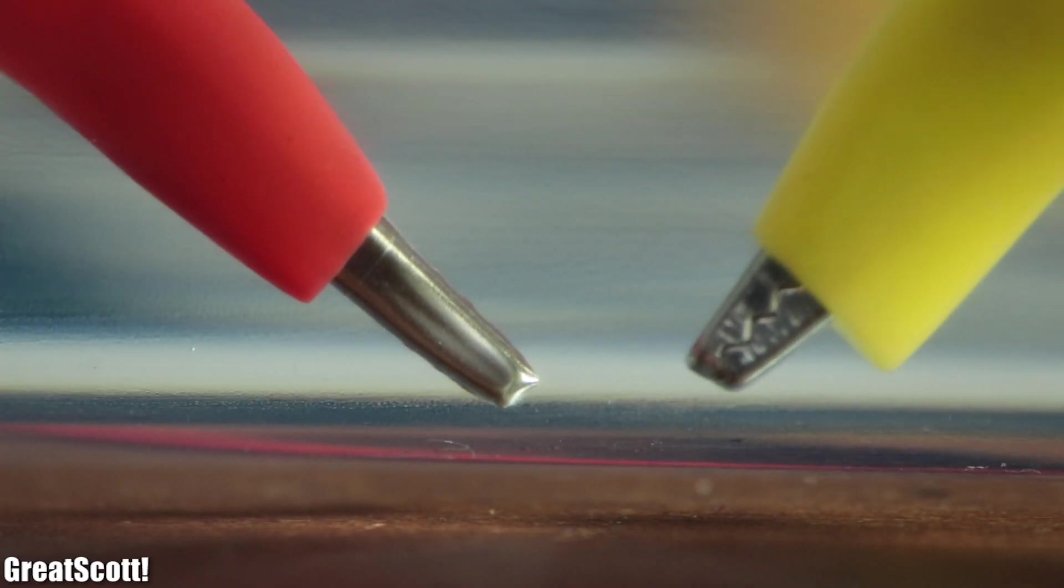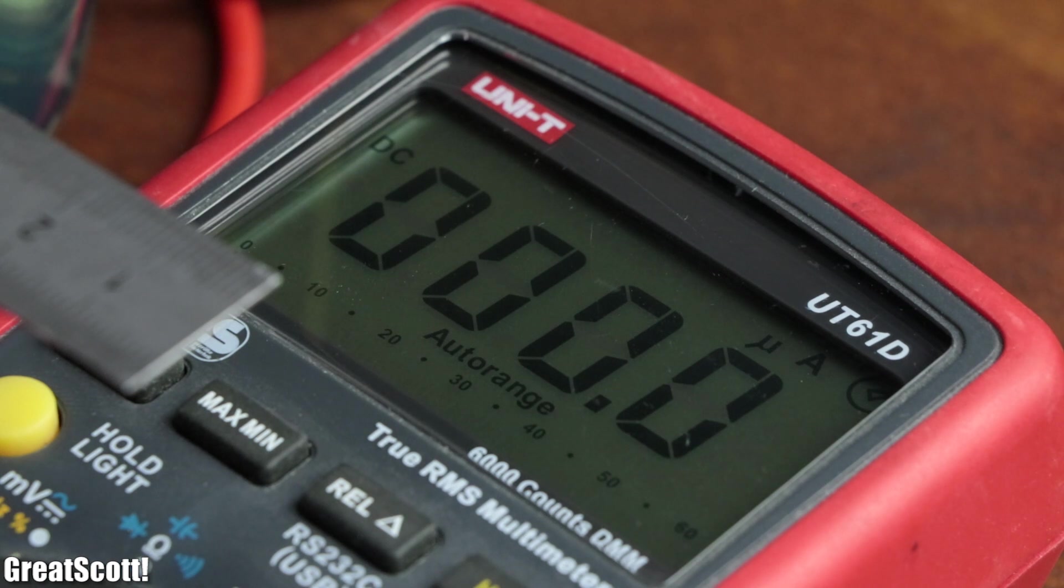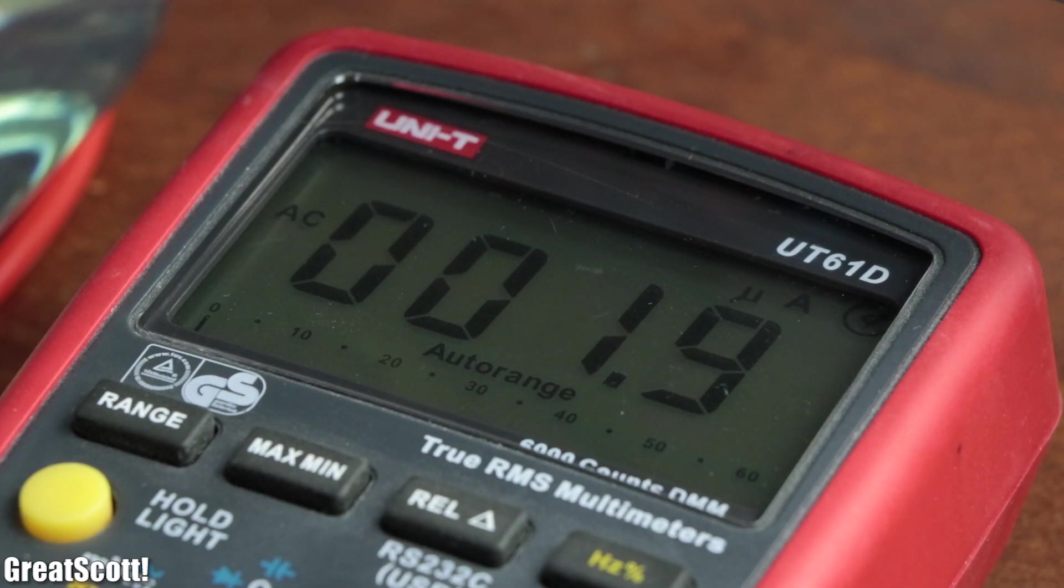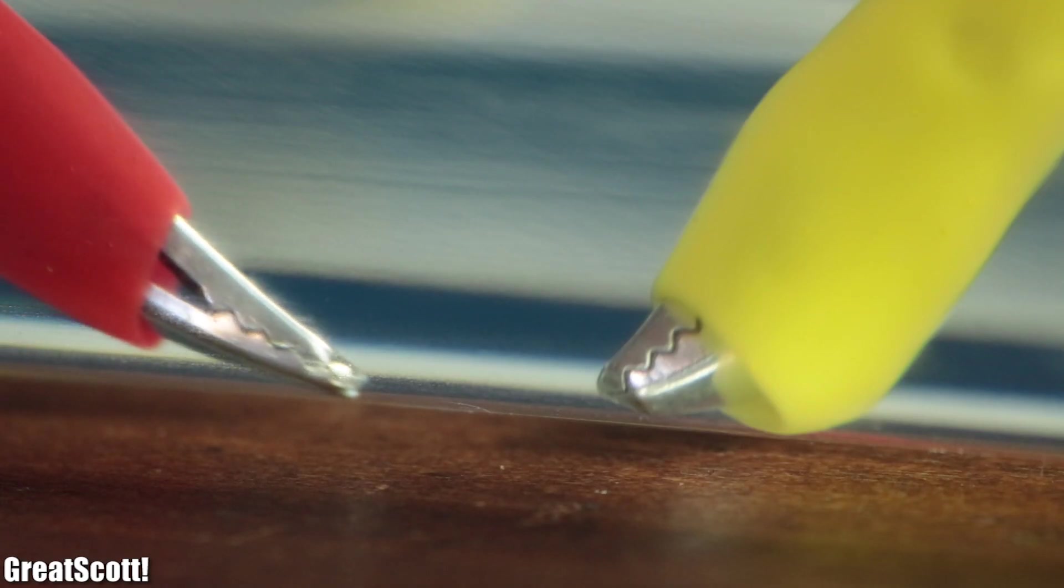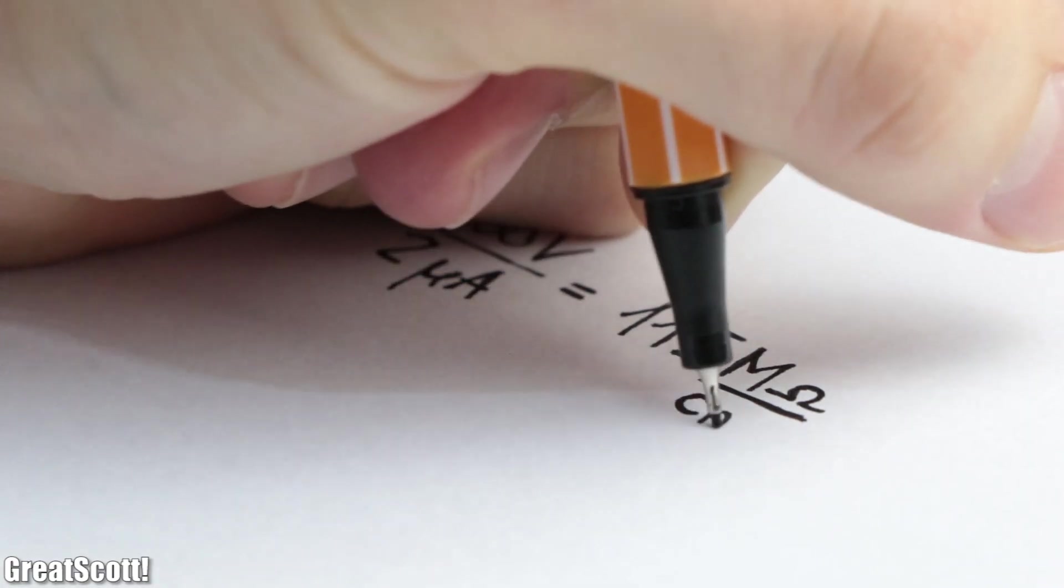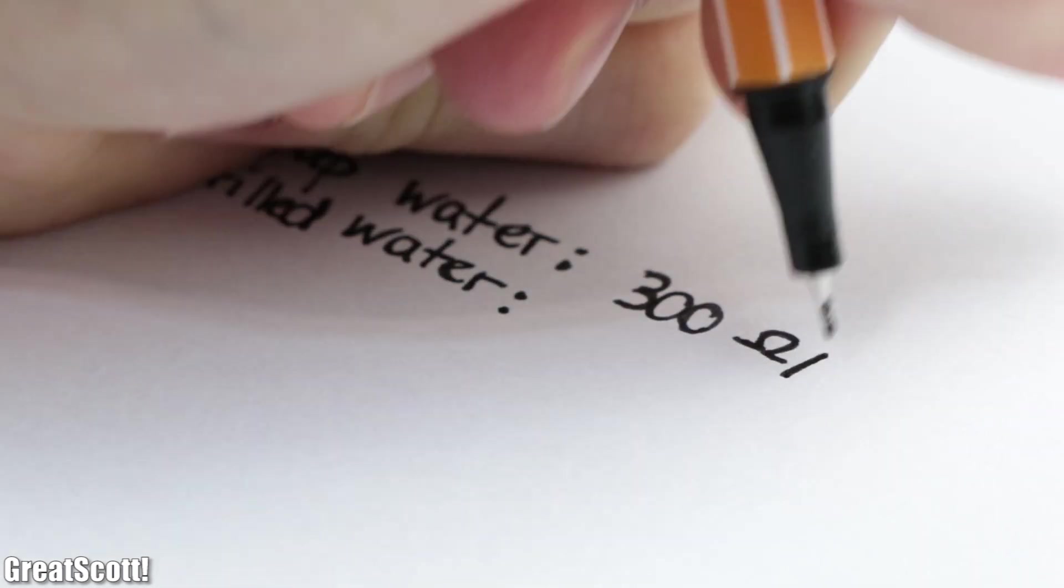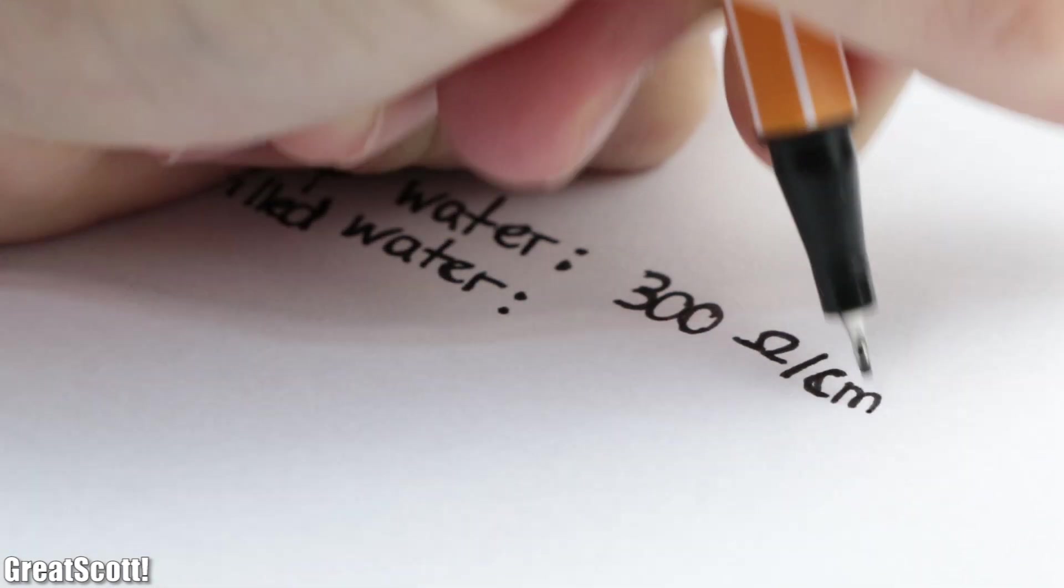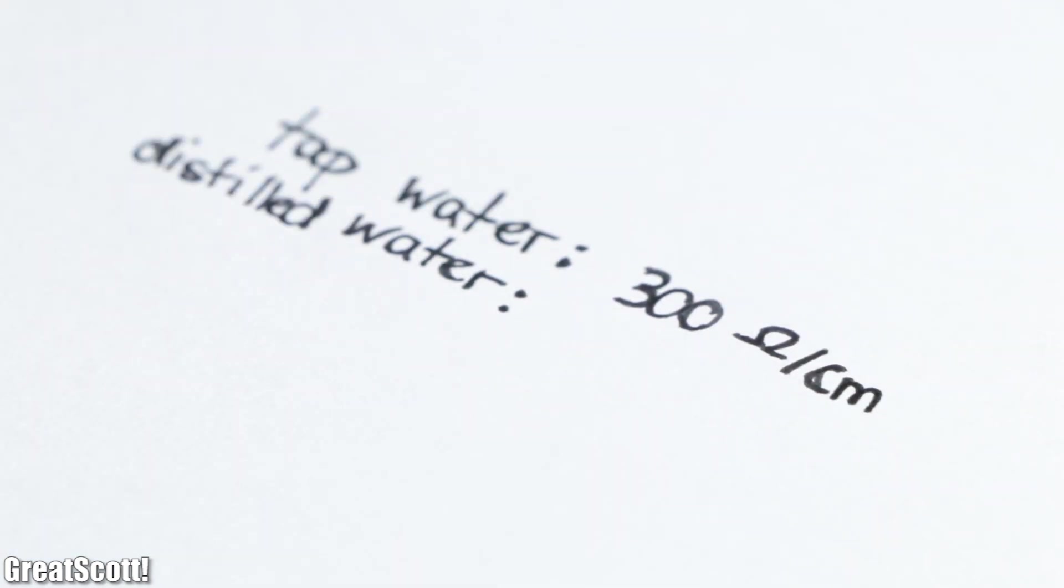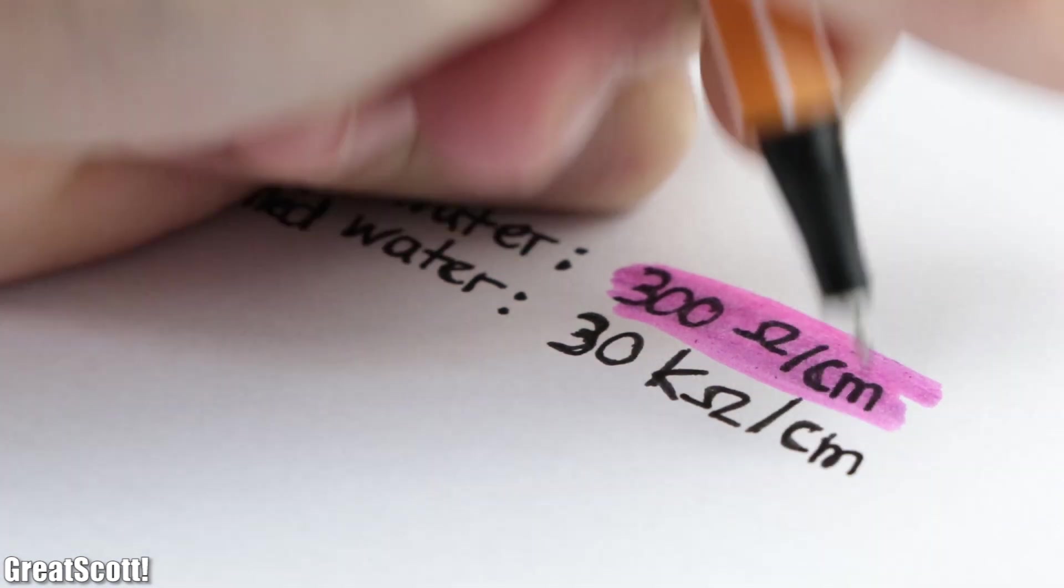With the DC voltage, no matter how close I got the probes to one another, the current flow was always beneath 0.0 microamps. And with the AC voltage, I got a current flow of 2 microamps at an approximate distance of 1 cm. That equals a resistance of 115 megaohms per centimeter. As a comparison, I previously measured a resistance of 300 ohm per centimeter for tap water and a resistance of 30 kiloohm per centimeter for impure distilled water.